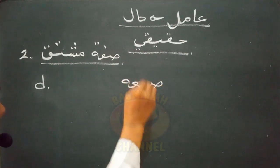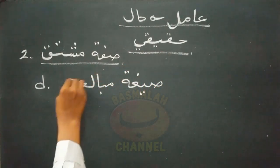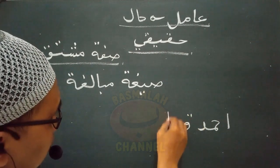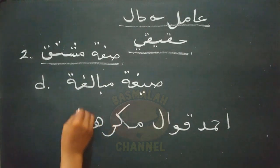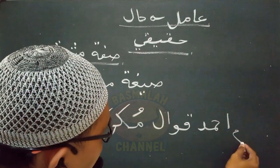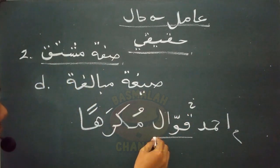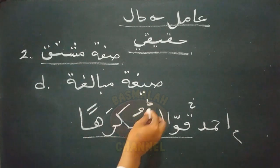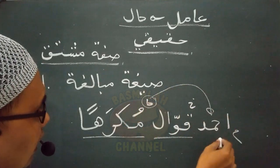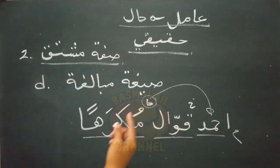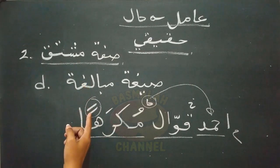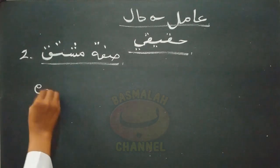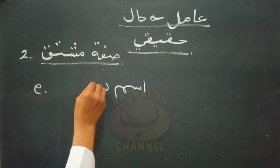Kemudian bentuk keempat adalah berupa sigot mubalagoh. Contohnya 'ahmadu kawalun mukrohan' - Ahmad ialah orang yang banyak berbicara dalam keadaan tidak disenangi atau dibenci. Lafat mukrohan kedudukannya sebagai hal yang menjelaskan keadaan daripada lafat ahmad sebagai syuhib halnya, wajib dibaca nasob. Yang memerintahkan adalah lafat kawalun yang merupakan sigot mubalagoh.